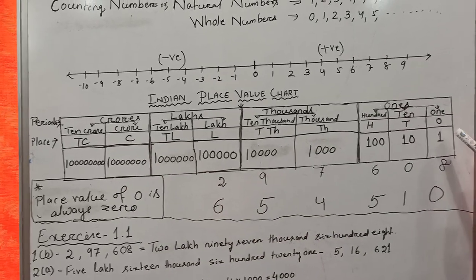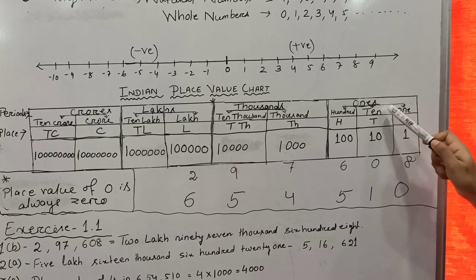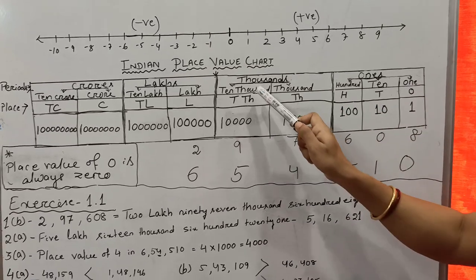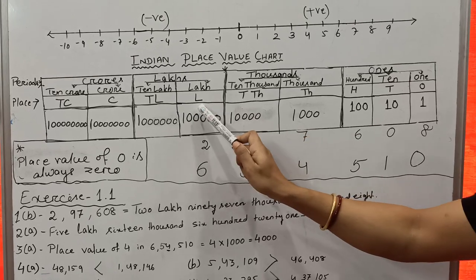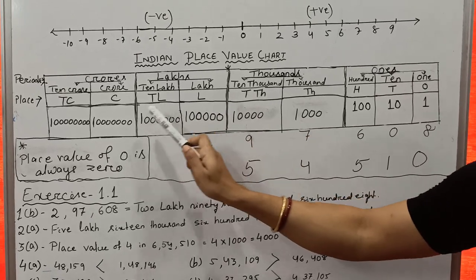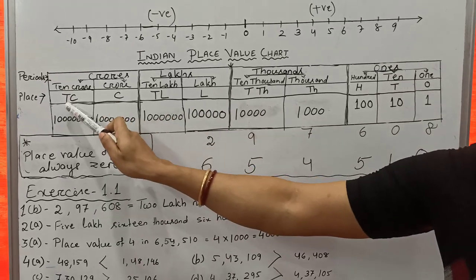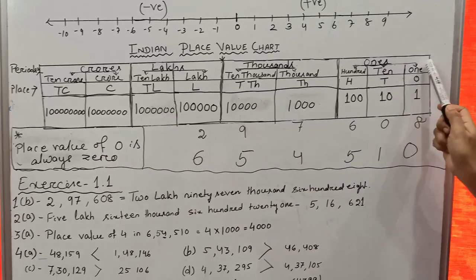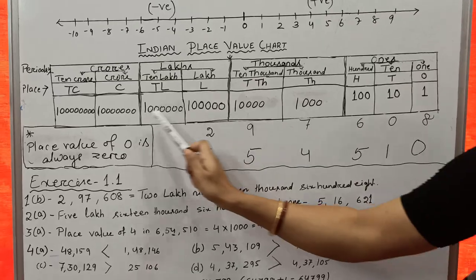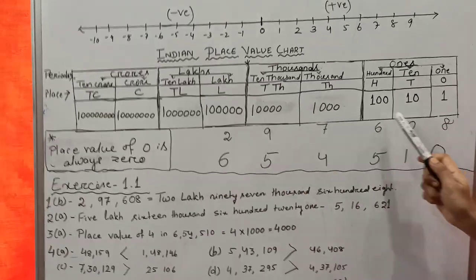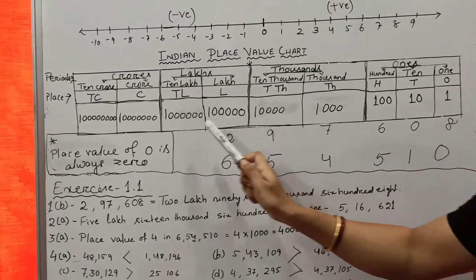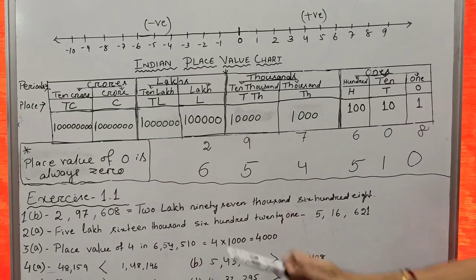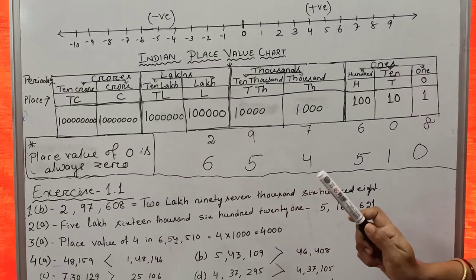The symbols used are: 1 is written as O, 10 as T, 100 as H, 1,000 as TH, 10,000 as T-TH, Lakh as L, 10 Lakh as TL, Crores as C, and 10 Crores as 10C. These are the place symbols. The place value of 0 is always 0.